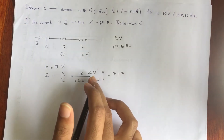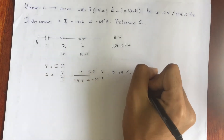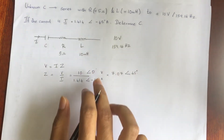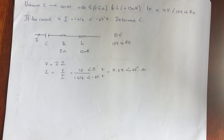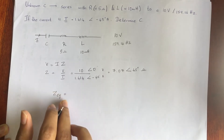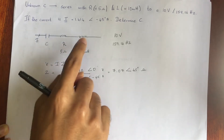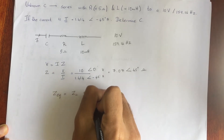So the total impedance Z is 7.07 at an angle of 45 degrees, with units of ohms. Now the next step is how to find the capacitance using this result. We already know that when impedances are connected in series, the equivalent impedance equals the sum of the individual impedances: Z_eq = Z_C + Z_R + Z_L.